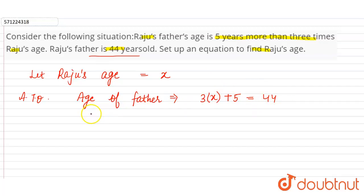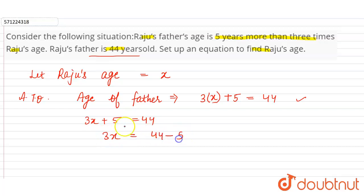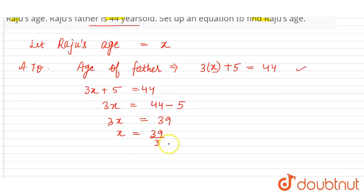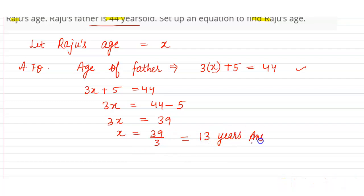Now, from this equation we have to find the age of Raju. So by solving, 3x plus 5 equals 44. Transferring the positive 5 to the other side, it becomes negative 5. So 3x equals 44 minus 5, that is 39. Therefore x equals 39 divided by 3, because 3 is in multiplication on the left-hand side, it will be in division on the right-hand side. So the age of Raju is 13 years, and this is the required answer.